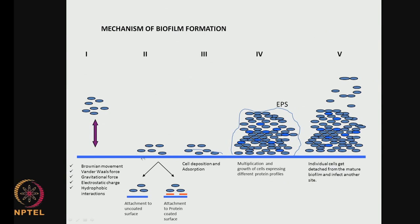Initially bacteria in Brownian motion are moving freely in the sassile form. They start getting attached because of non-bonded interactions like van der Waals forces, gravitational forces, electrostatic forces, hydrophobic interactions, and hydrogen bonds. They attach either on an uncoated surface or on a protein layer already formed on the surface. The cells deposit, adsorb, and slowly multiply, and exopolysaccharides are formed, creating a big matrix layer. The bacteria on the surface get enough oxygen and nutrients, while bacteria at the bottom do not get as much due to limitations in diffusion of oxygen, nutrients, and other chemicals.